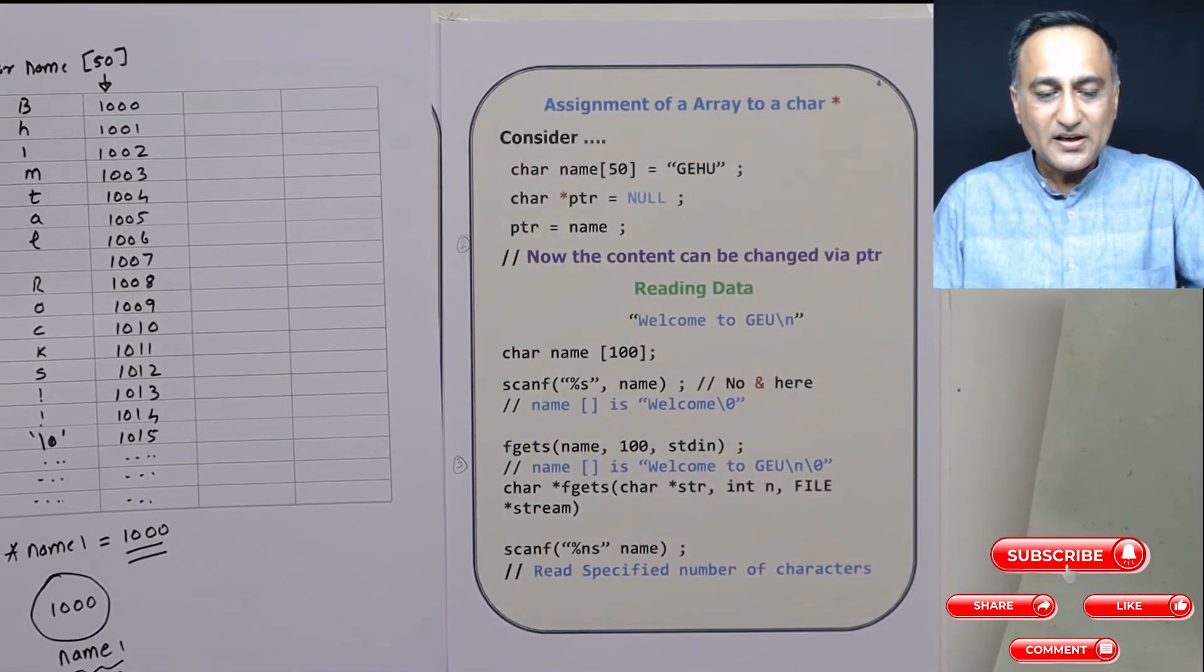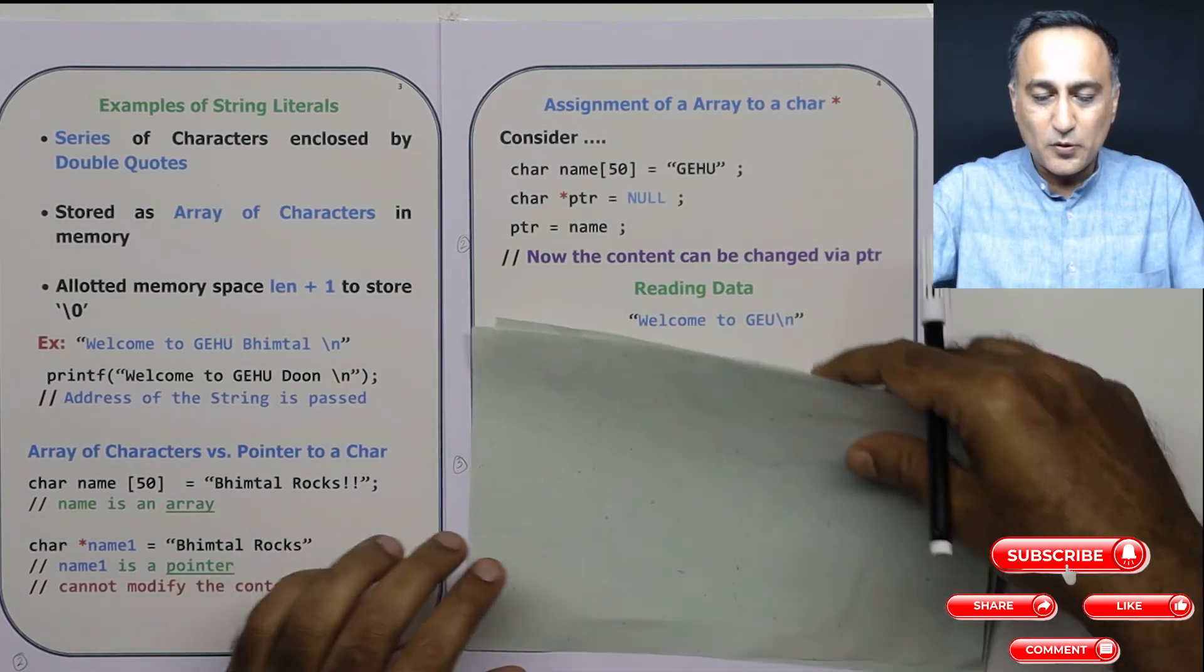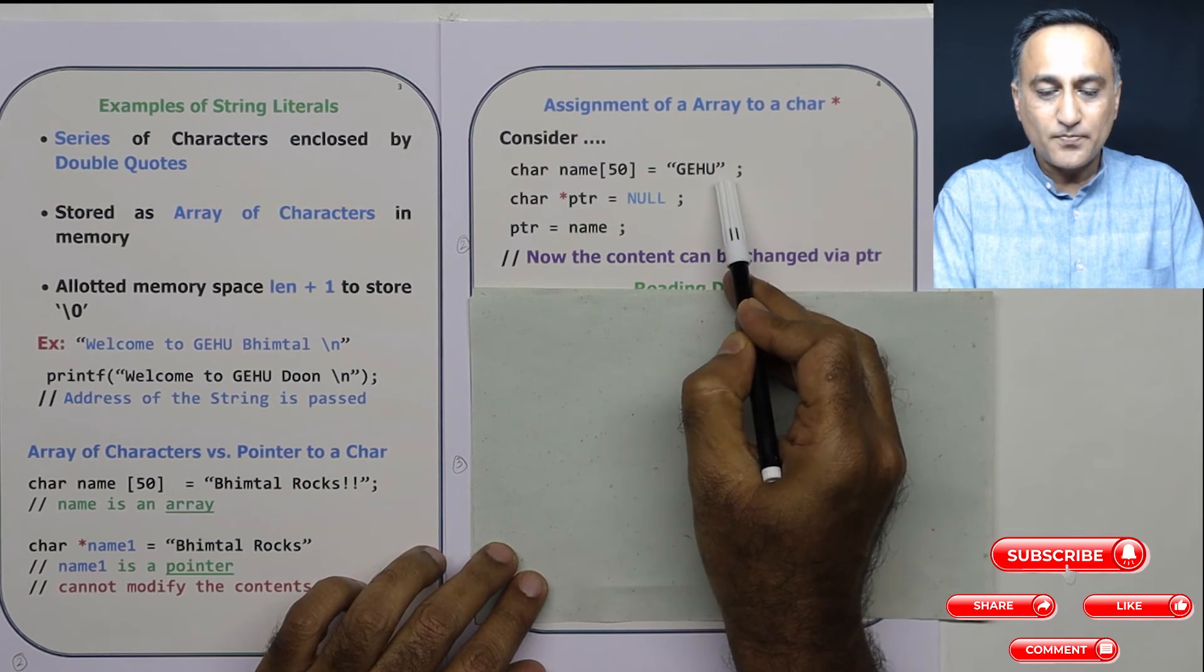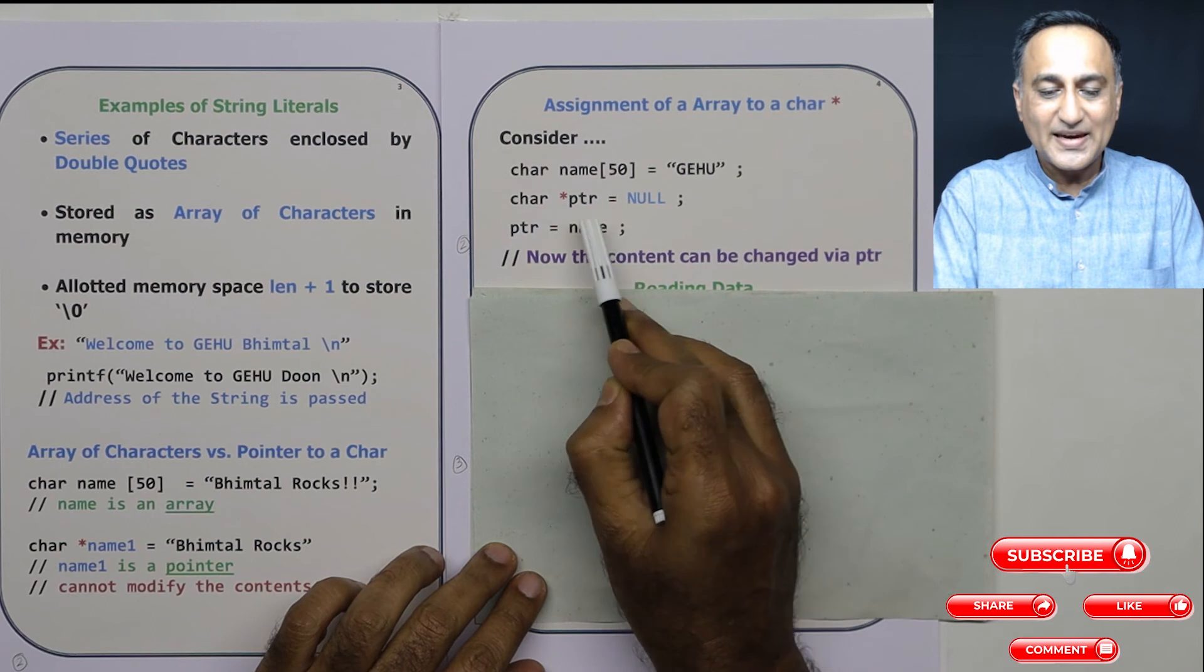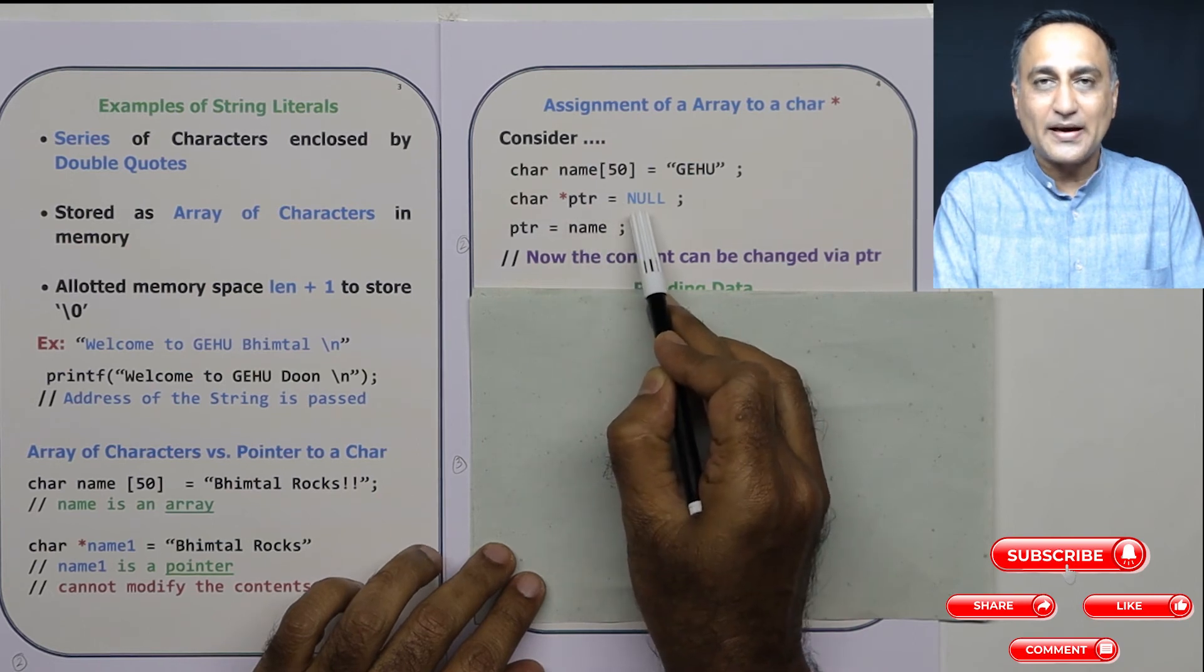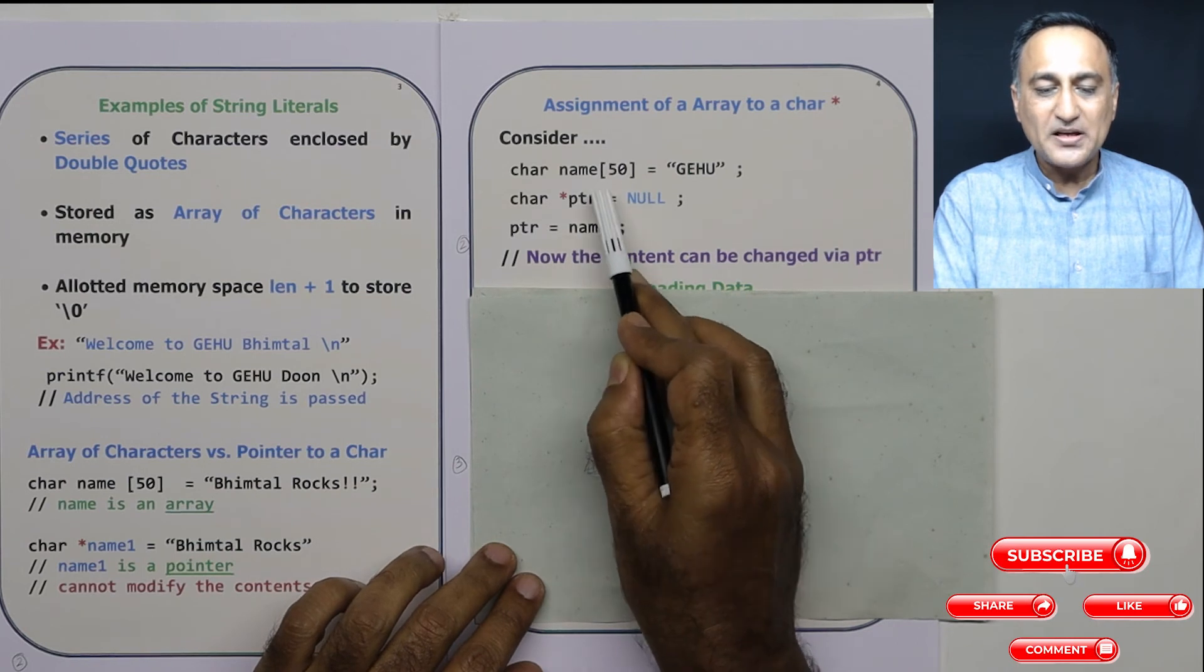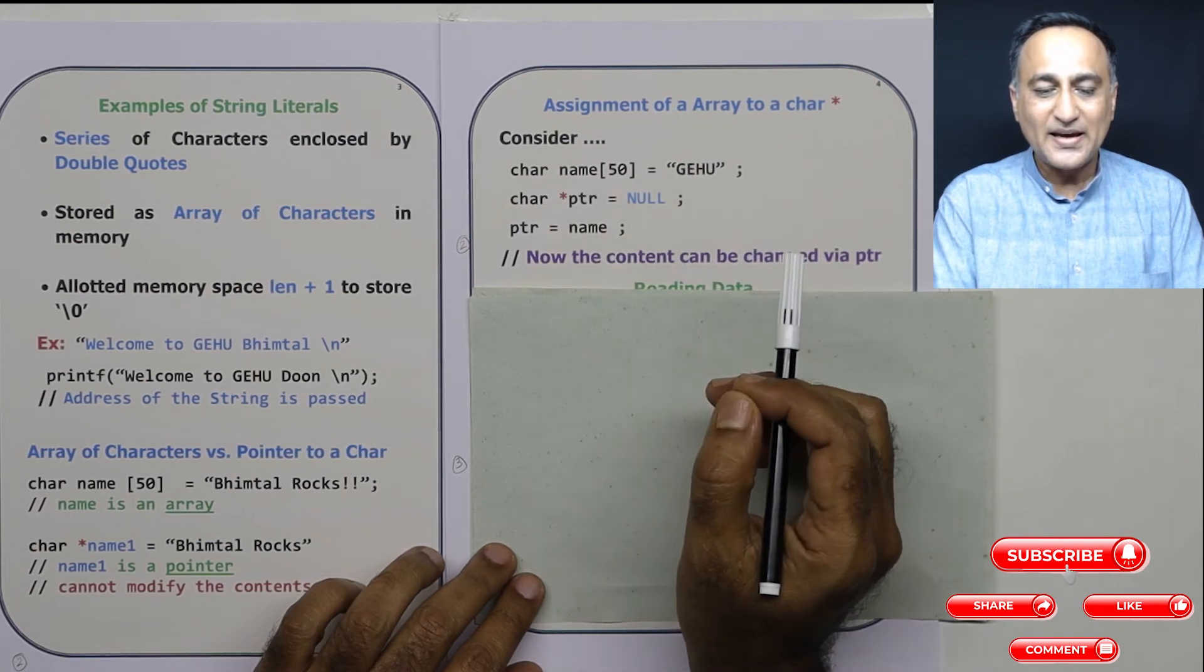Now what I am doing here is, suppose I have name[50] as "gehu". If I want to modify this, what I can do is I can take a char *ptr and initialize with null so that I want to avoid ptr containing some random garbage address. So ptr is given name. Ptr will contain the address of the array or the address of g which is the 0th element of the array.